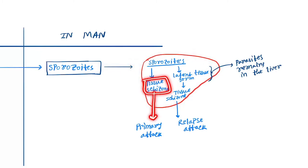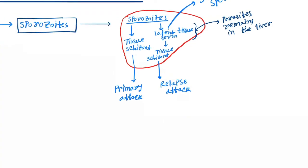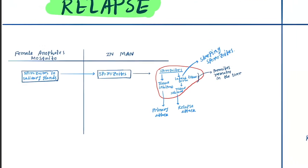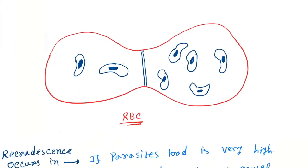In the liver, sporozoids will cause the primary attack by the merozoites, transforming into merozoites. But some sporozoids cause the latent form, or the sleeping sporozoids, which will remain there and cause an attack later. That attack is called a relapse attack.